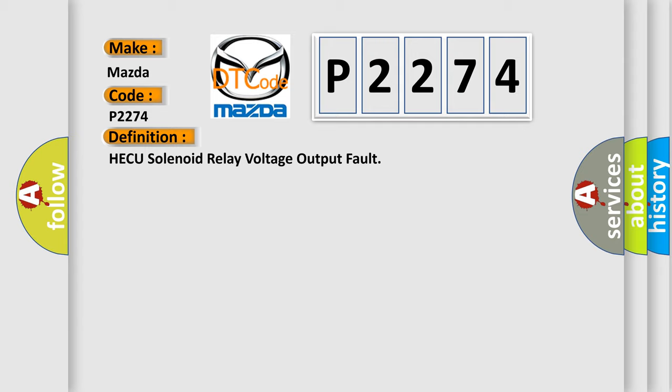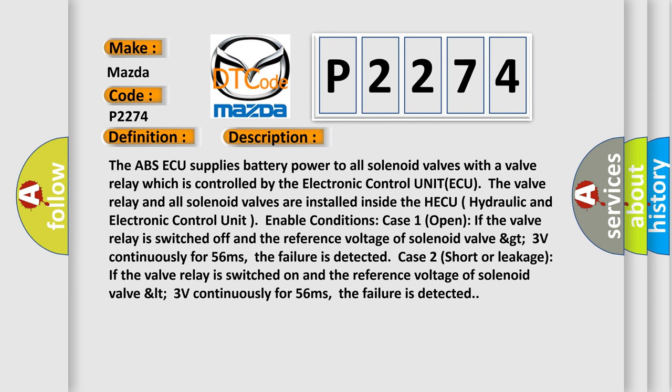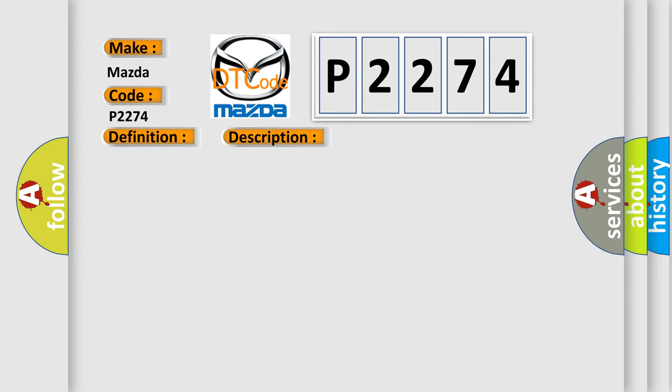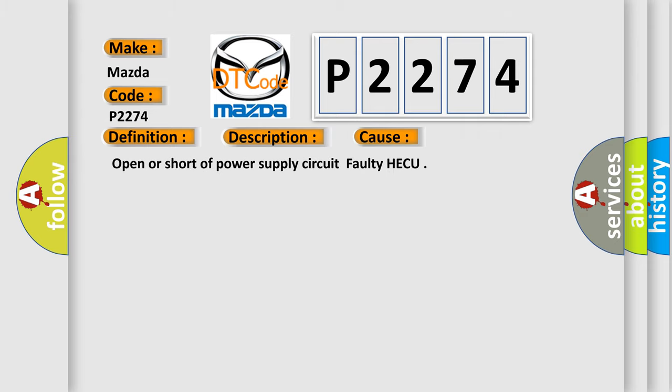The basic definition is: HECU solenoid relay voltage output fault. The ABS-AQ supplies battery power to all solenoid valves with a valve relay, which is controlled by the electronic control unit (ECU). The valve relay and all solenoid valves are installed inside the HECU (hydraulic and electronic control unit). Enable condition case one — open: if the valve relay is switched off and the reference voltage of the solenoid valve is greater than 3 volts continuously for 56 milliseconds, the failure is detected. Case two — short or leakage: if the valve relay is switched on and the reference voltage of the solenoid valve is less than 3 volts continuously for 56 milliseconds, the failure is detected. This diagnostic error occurs most often due to an open or short of the power supply circuit, or a faulty HECU.